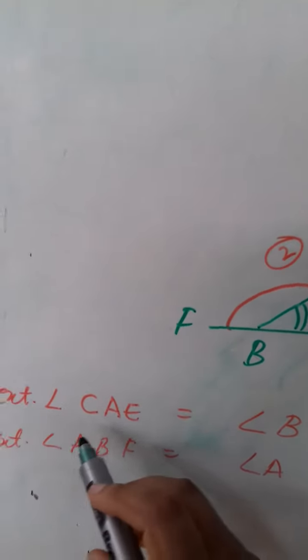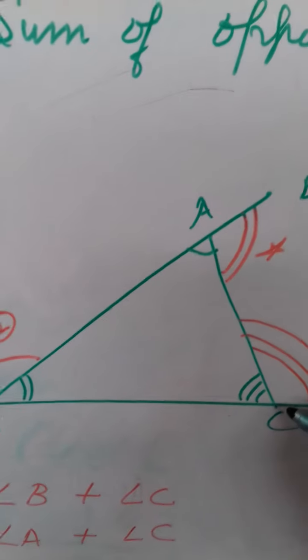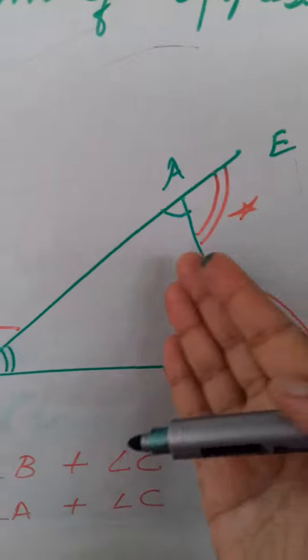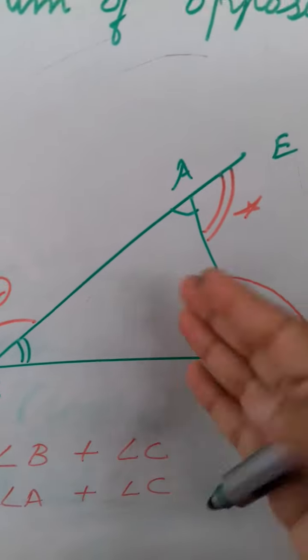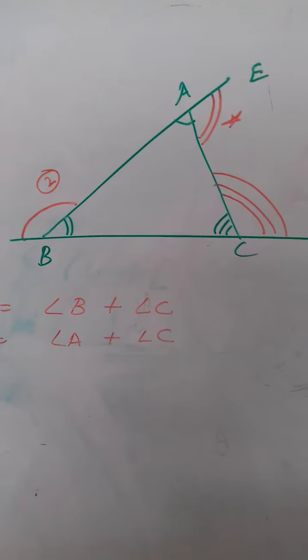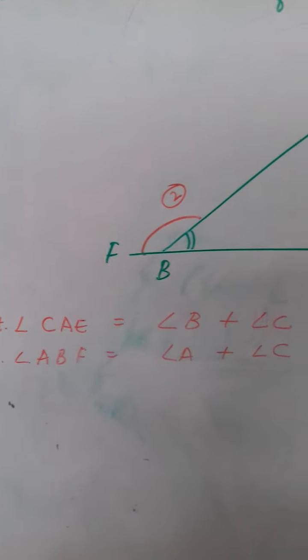Okay so exterior angle CAE is equal to angle B plus angle C. Interior but opposite, opposite interior angles. So CAE is equal to angle B plus angle C.